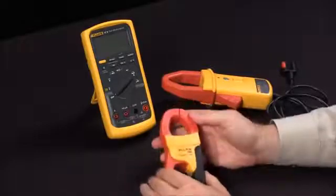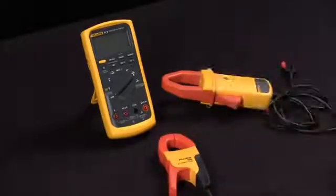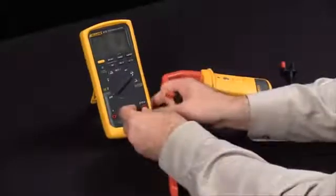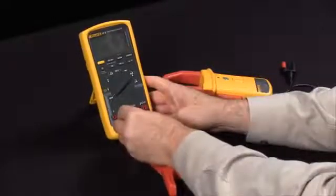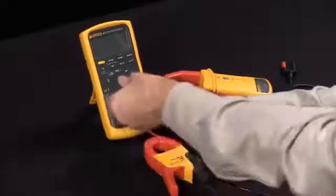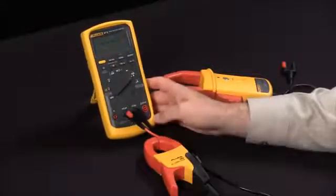To measure AC current simply insert your test leads into the jacks. In this case you would go into your common as well as your milliamp jacks, then set your meter to measure on milliamps.